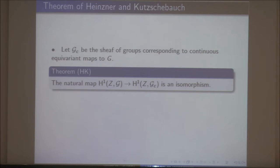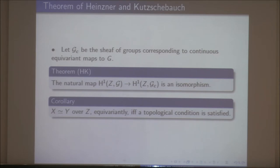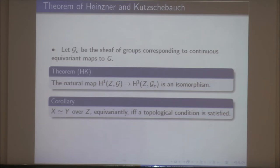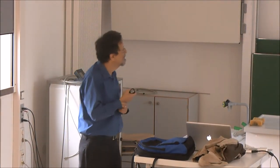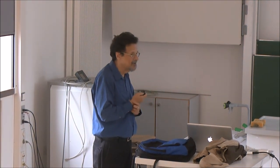The corollary is that X is equivariantly isomorphic to Y over Z if and only if the topological condition is satisfied — namely the vanishing of H^1(Z, G_C) where these are continuous maps. So if X and Y are generic and locally isomorphic over a common quotient, then the obstruction to being equivariantly biholomorphic is purely topological. We have an Oka principle.